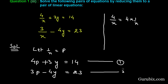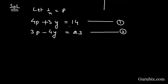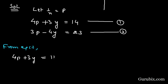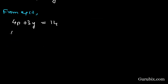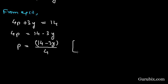Now we shall apply the substitution method to solve this pair of linear equations. Starting with equation number 1: 4p + 3y = 14. We write p in terms of y: 4p = 14 - 3y, which means p = (14 - 3y) / 4.